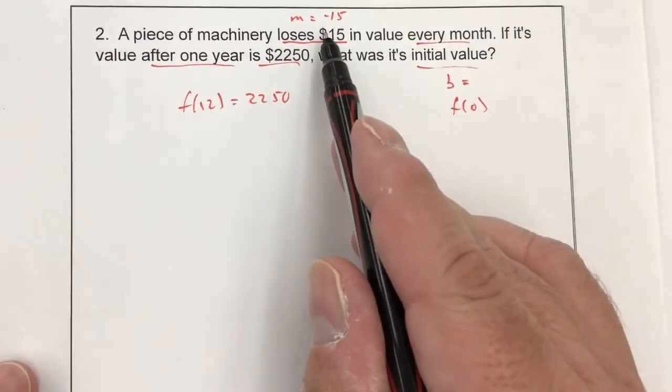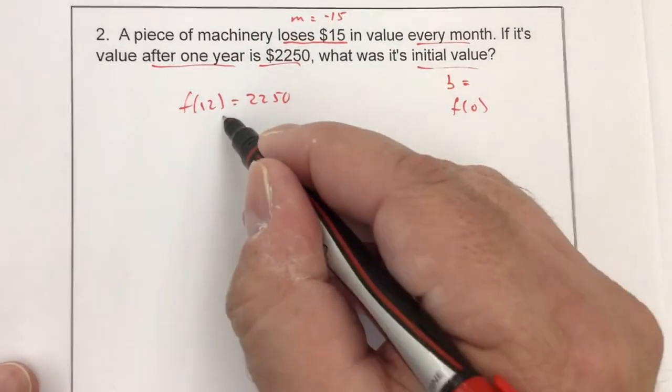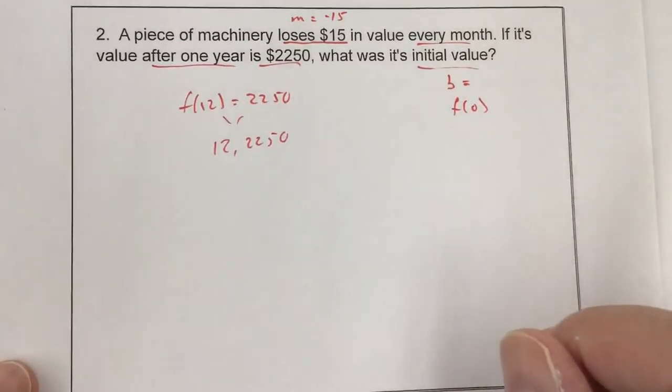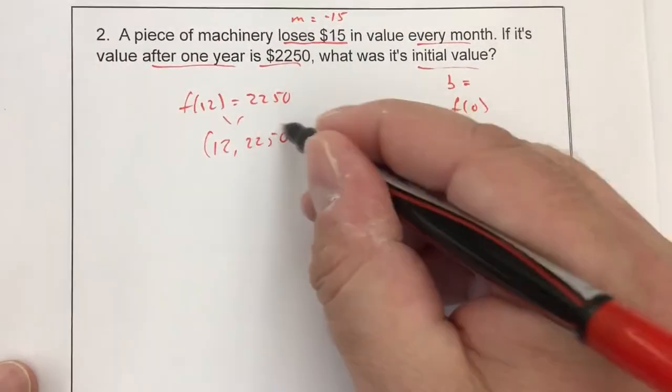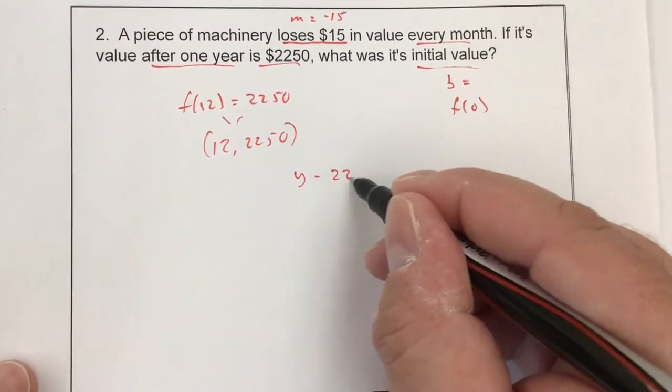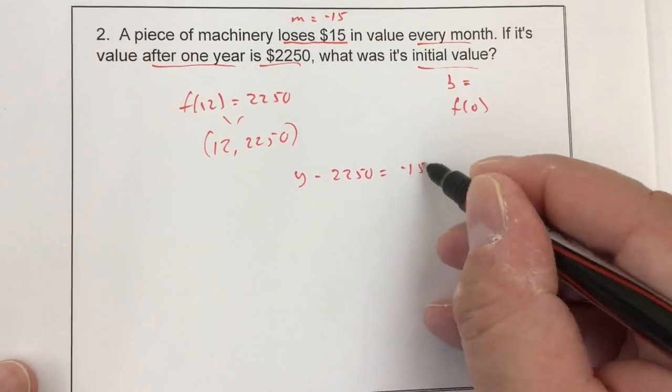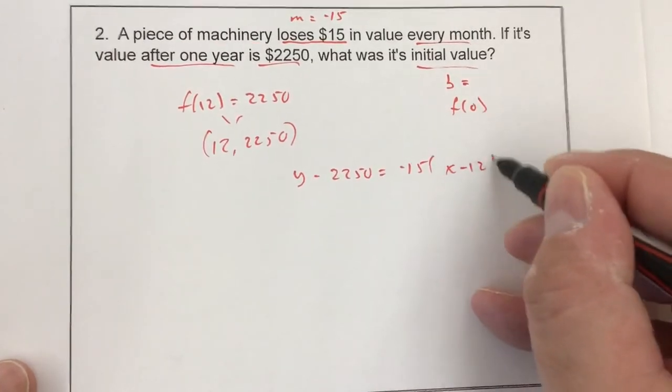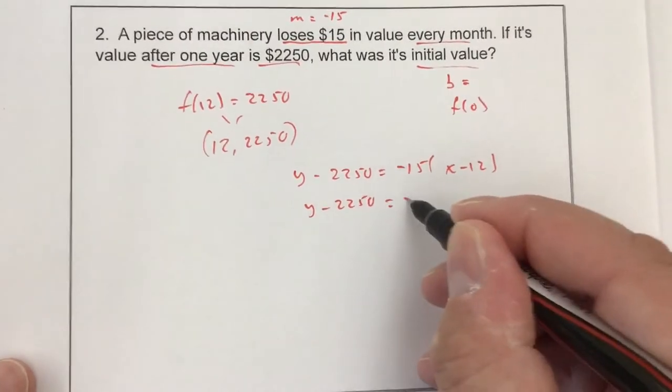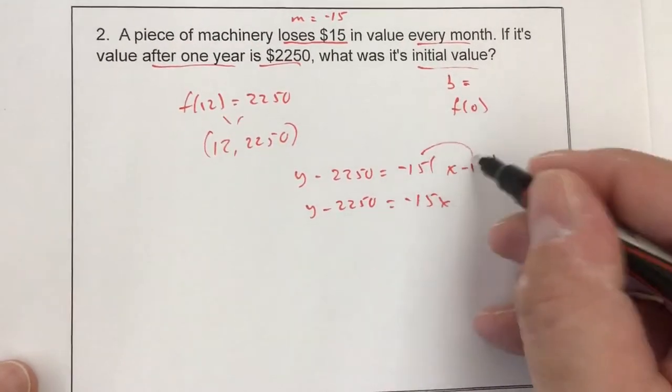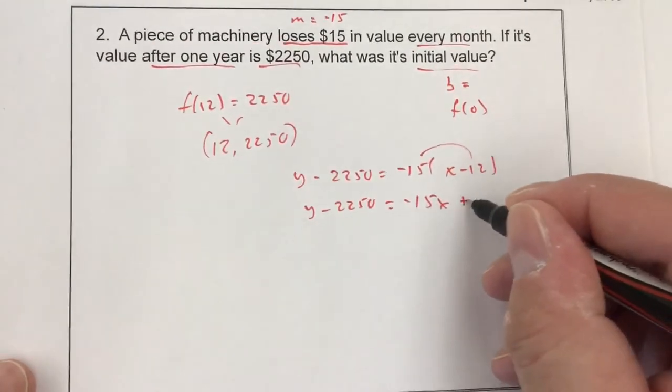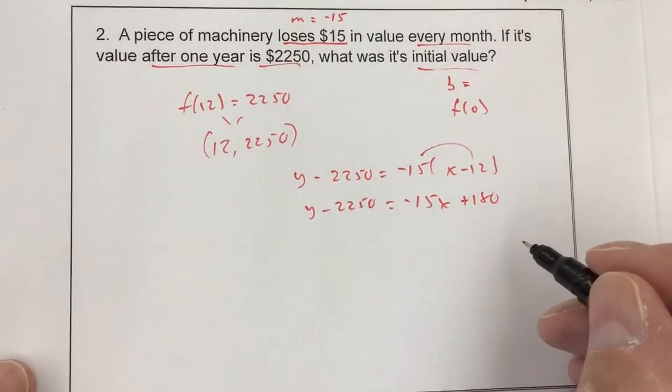So I know that f(12) equals $2,250. But I also know my slope. So I have (12, $2,250). I know my slope. y minus $2,250 equals negative 15 times x minus 12.